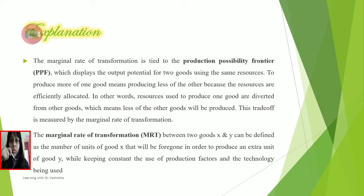The marginal rate of transformation, MRT, between two goods, if you take an example of X and Y, can be defined as the number of units of good X that will be foregone in order to produce an extra unit of Y while keeping constant the use of production factors and the technology. These are the assumptions where we keep both factors constant, and then we evaluate how much we need to sacrifice one good for producing the other. This MRT tells us the rate of sacrifice of one good to produce another.